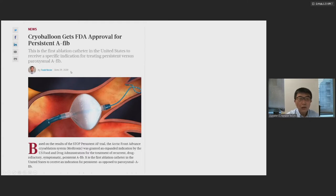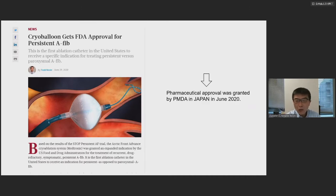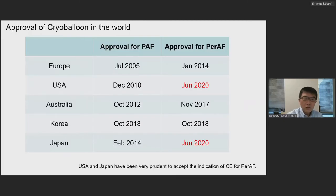This web news shows the FDA approval dated June 29 — very recent. Now FDA has approved cryoballoon for persistent AFib. And pharmaceutical approval was also granted by PMDA in Japan in June of this year. So now USA and Japan have simultaneously approved cryoballoon for persistent AFib.